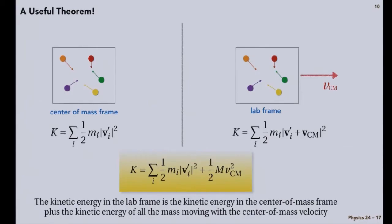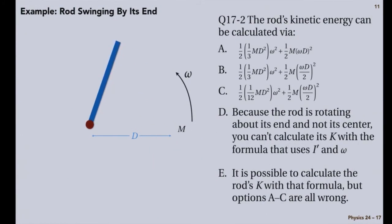So in other words, the kinetic energy in the lab frame is the kinetic energy in the center of mass frame plus the kinetic energy of all the mass moving with the center of mass velocity, which is just what it says in more compact notation in the yellow box. Are you ready? There was the nifty animation. Did you miss it? I did too. Once more. Oh, that was exciting.